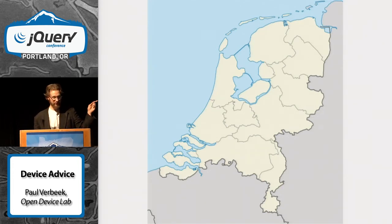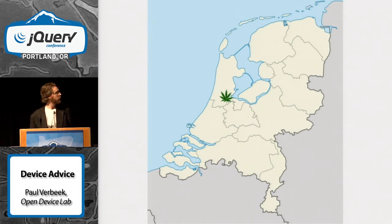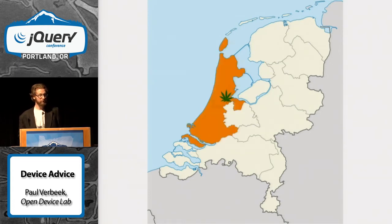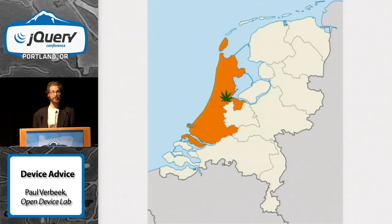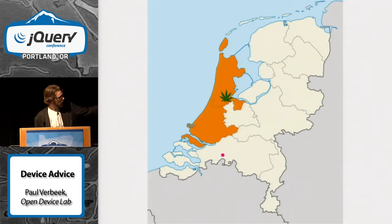First of all, this is the Netherlands, and as you can see, it's not the capital of Denmark. And the Netherlands is not the same thing as Amsterdam — we don't all live in Amsterdam, it's just our capital. And it's not the same thing as Holland. North and South Holland are just two provinces. It's like saying that the U.S. is the same thing as Dakota. I live and work in Breda, which is not Amsterdam or in Holland.